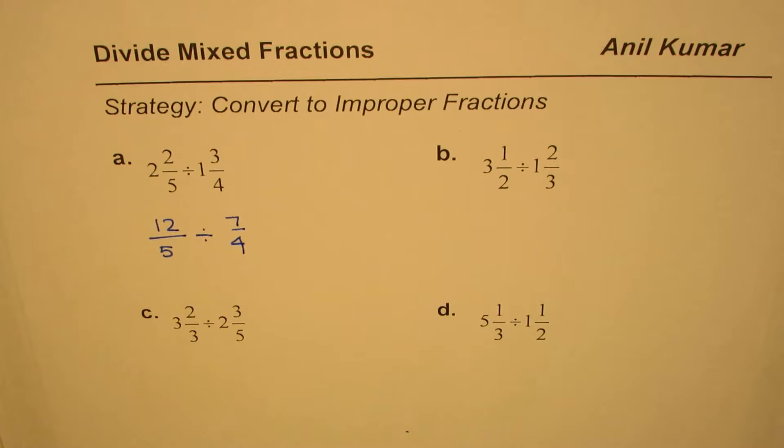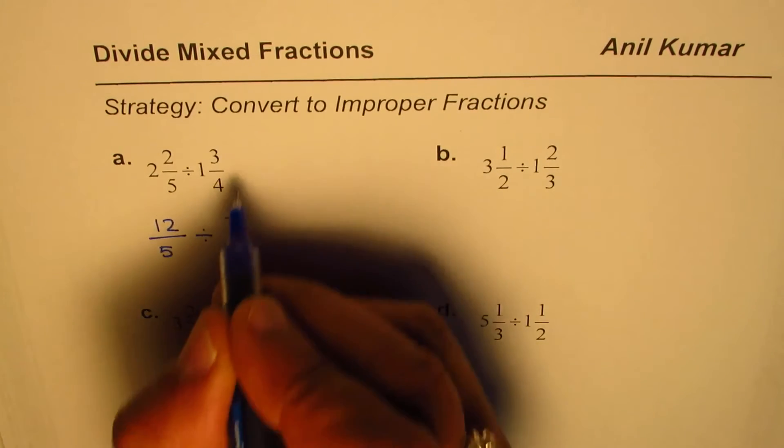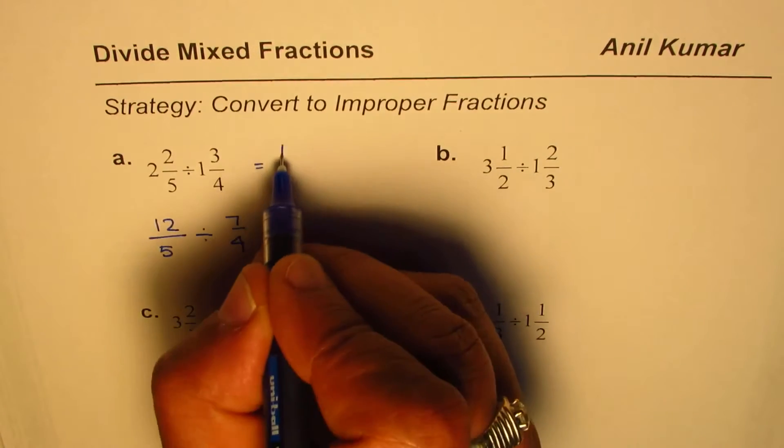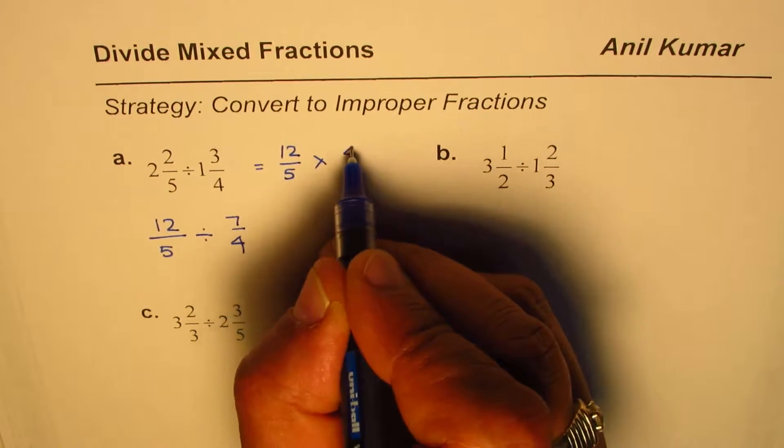The second step here is to write division as multiplication. So we'll write this as 12/5 times—for that you flip this to get 4/7.